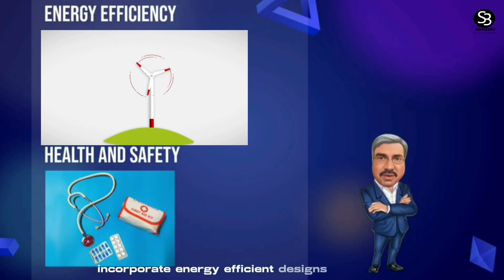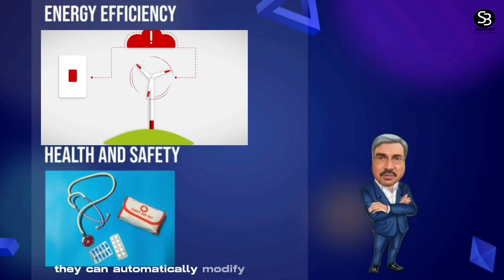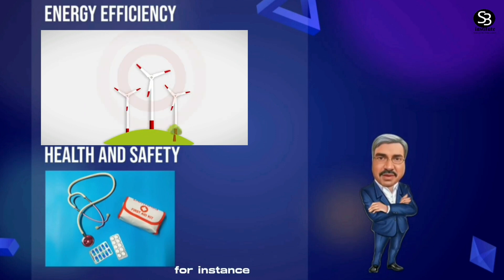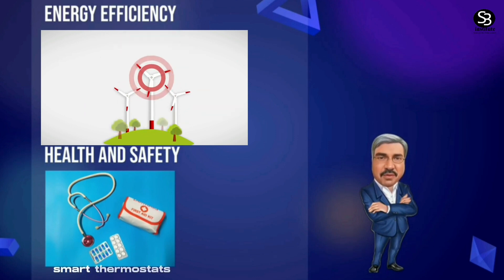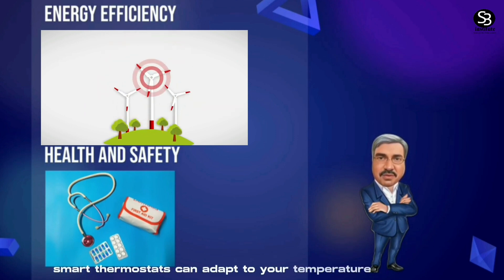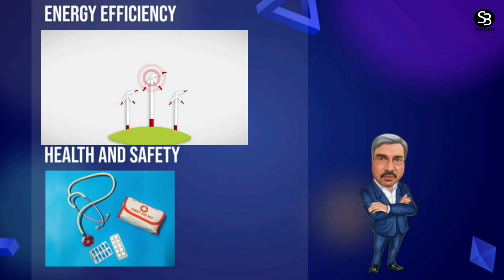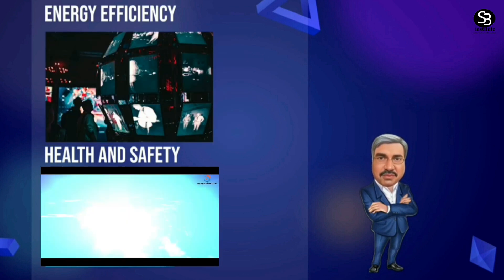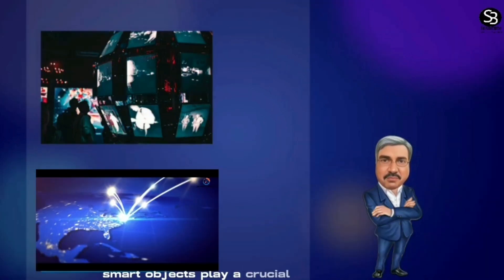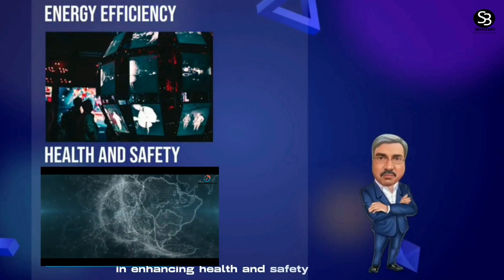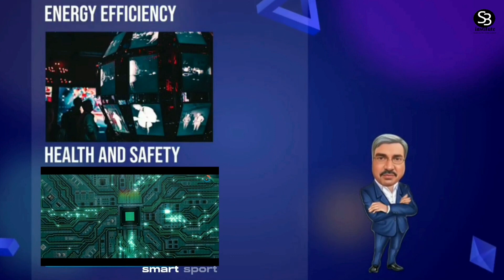Energy efficiency: Smart objects frequently incorporate energy-efficient designs. They can automatically modify settings to conserve energy and lower utility expenses. For instance, smart thermostats can adapt to your temperature preferences to optimize energy use.